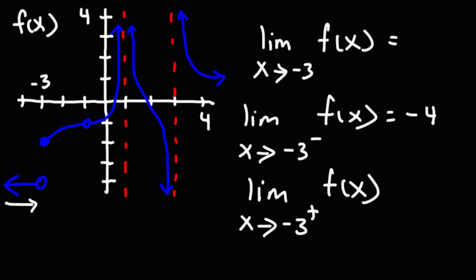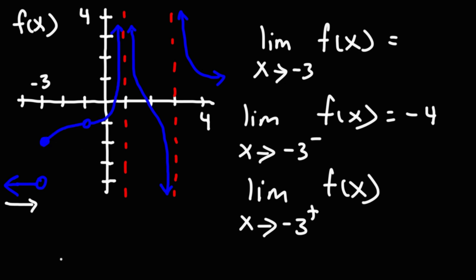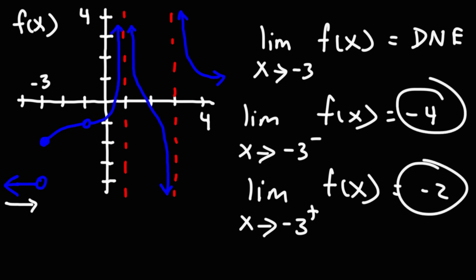Now what about the right side? As we follow the curve towards x equal negative 3 from the right side, we get to this point which gives us a y value of negative 2. Notice that the two one-sided limits are not the same. Therefore the limit as x approaches negative 3 does not exist, because the left-side limit and the right-side limit do not match — they are not equivalent to each other.